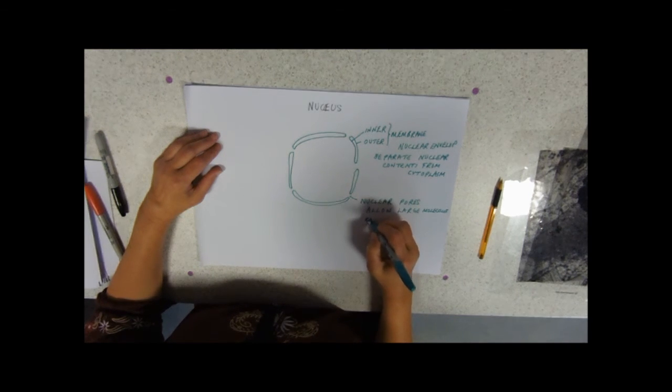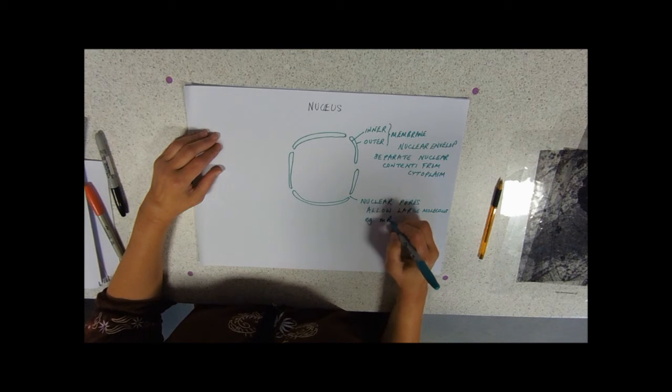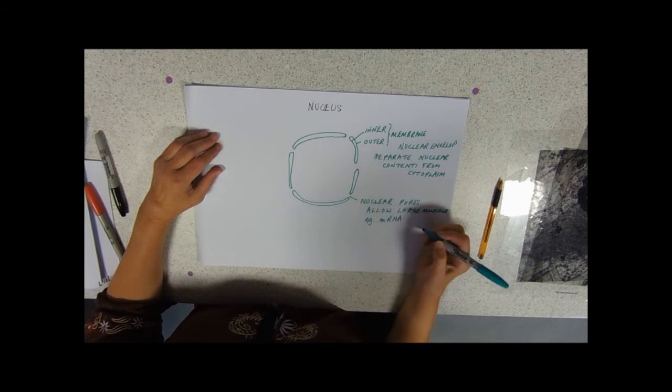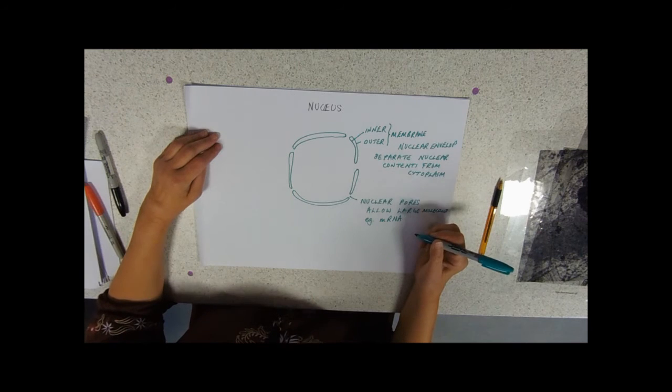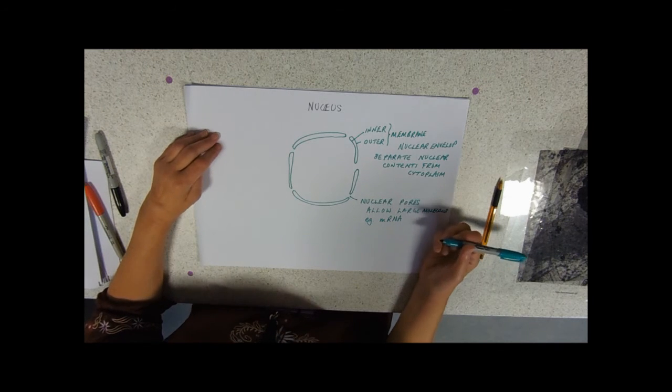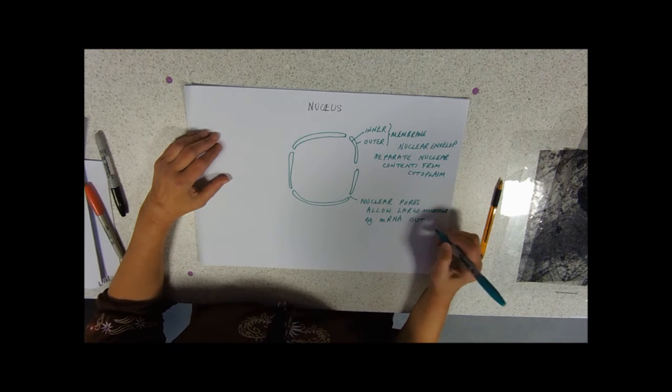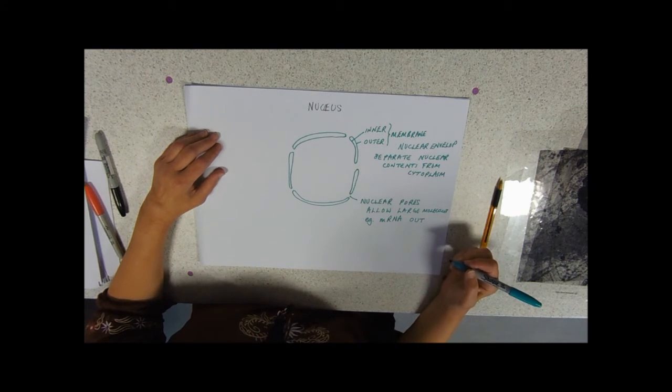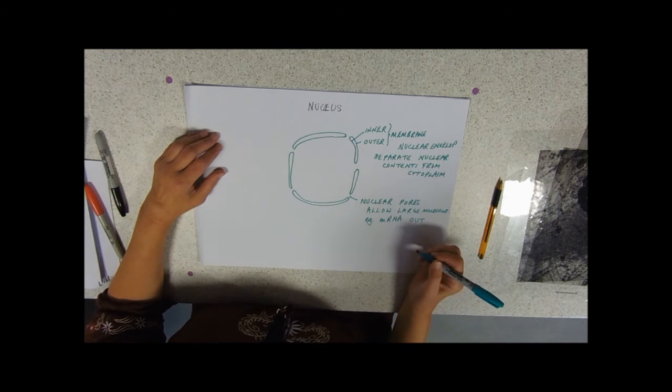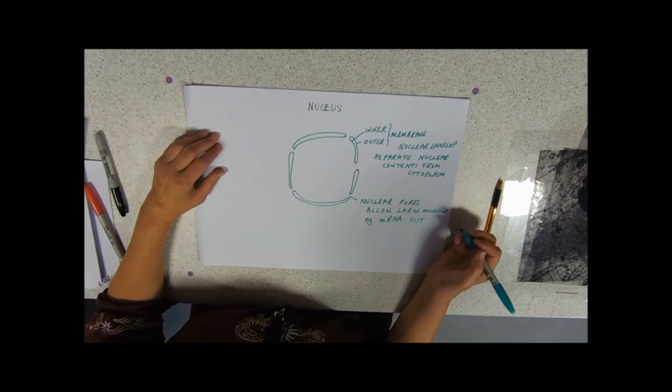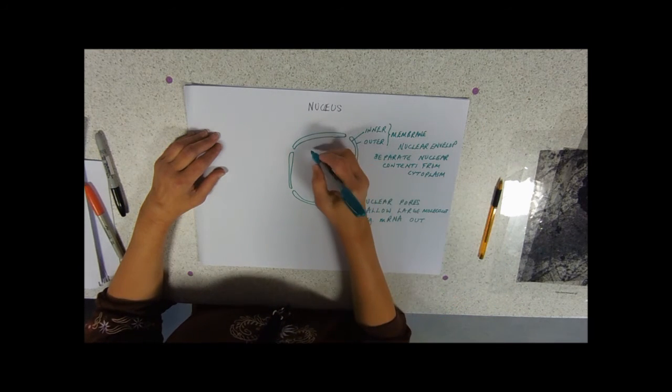And their job is to allow large molecules—for example mRNA. Now we will do later on in the course what mRNA is, what it does, what its role is, and enough to know that it's a big molecule, it needs to get out of the nucleus, and it goes out through a nuclear pore for now.